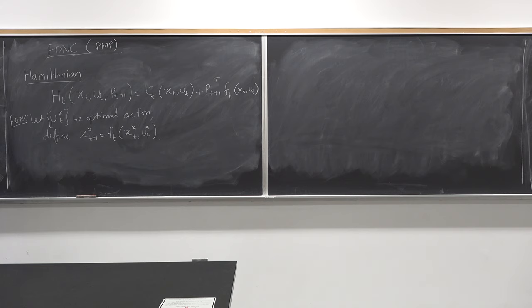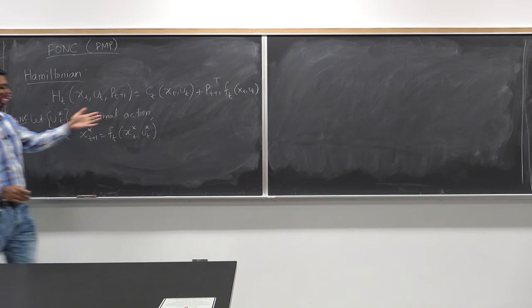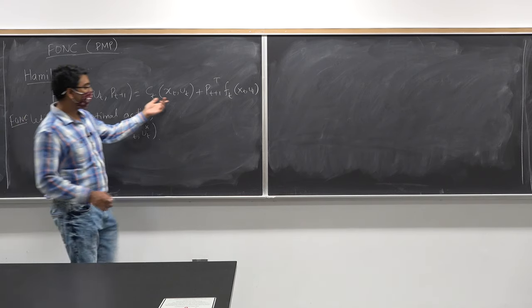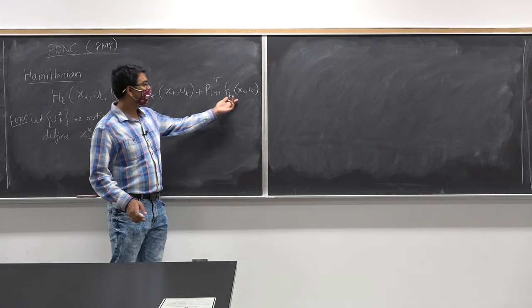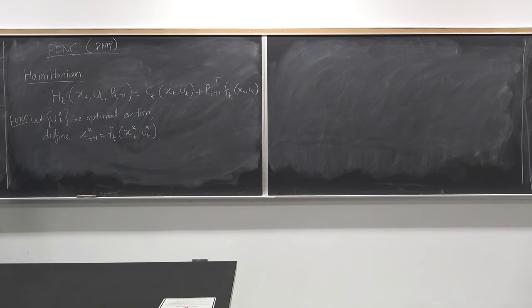This is the definition of the Hamiltonian — it's just like the Lagrangian. It's a definition based on the running cost and the state transition function. Now, these are the first-order necessary conditions for optimality.